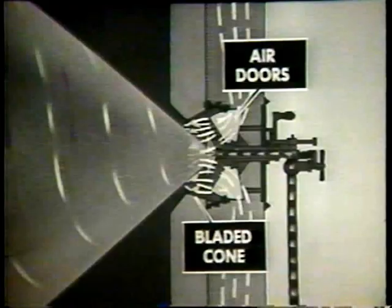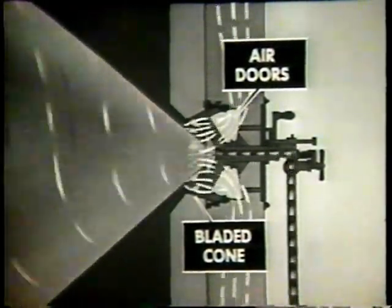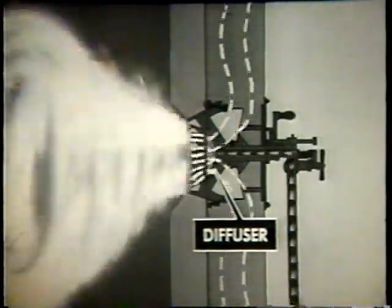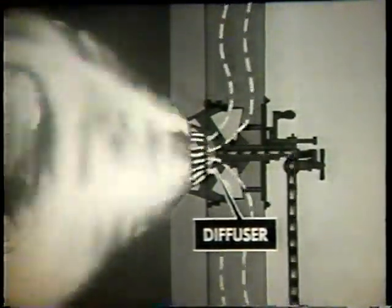Meanwhile, in the burner register, air provided by the force draft blower is given a rapid rotating motion by the air doors and bladed cone and mixed with the oil spray. The mixture of oil and air enters the furnace where combustion takes place. The diffuser prevents the air blast from blowing the flame from the atomizer tip.